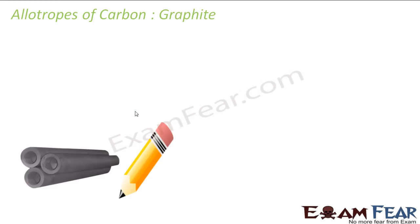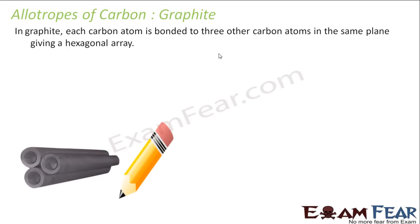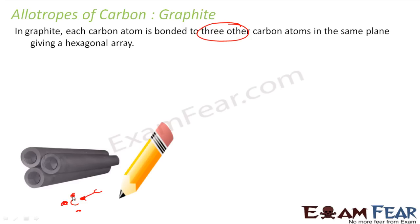The second allotrope is graphite. You must have seen graphite in a pencil or in batteries. In graphite, each carbon atom is bonded to only three carbon atoms — not four as in diamond. Since one carbon atom has four electrons but is bonded to only three others, one electron is left free, and that is why graphite conducts electricity.